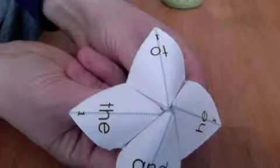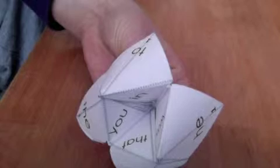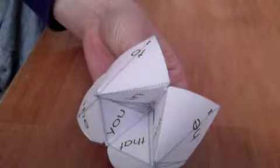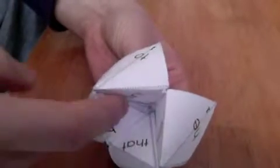And really, that's it. The very last stage of using the cootie catcher is to keep the cootie catcher open and then select one flap that you want to lift up like so.